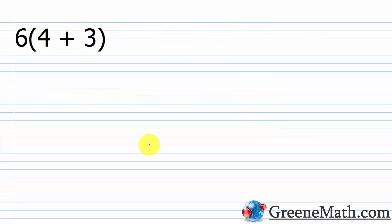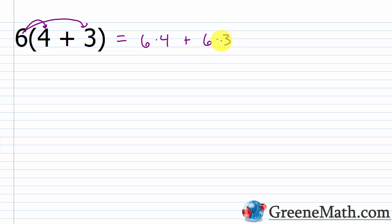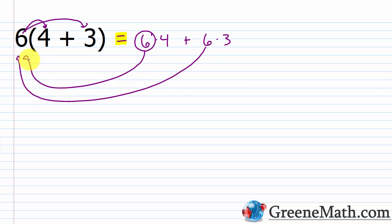Now that we've reviewed how to find the greatest common factor for a group of monomials, we want to think about how to factor out the GCF. When I look at something like 6 times the quantity (4 plus 3), this is a simple example of the distributive property. 6 multiplied by 4 gives 24, and 6 multiplied by 3 gives 18. Because of the equality, I could go in reverse — pull the 6 back out from each term and have what's left, which is 4 plus 3. The distributive property allows us to write a product as a sum, and also a sum as a product.